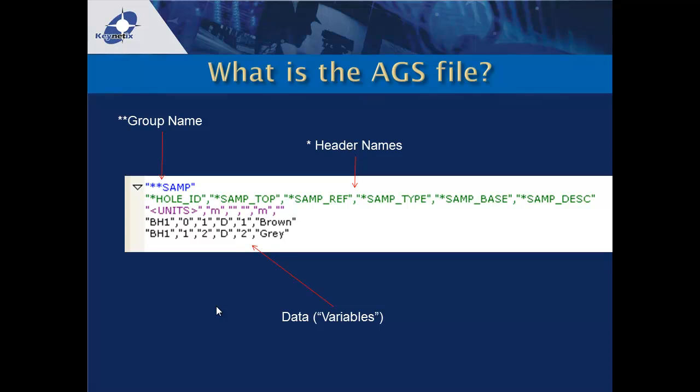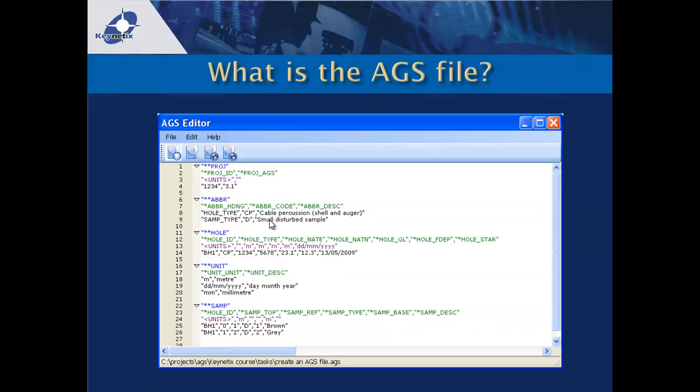There's a UNITS row to specify what the data below will be in, and then we have the physical data itself. For example, borehole 1 has a sample going from 0 metres to 1 metre, referenced as a type D, and described as brown. These AGS tables — or groups — are all added together into one AGS file. Here we can see a simple screenshot using an AGS editor, a free product from Keynetix. Importantly, an AGS file is simple — you can import it into Excel quite easily and start producing SPT with depth plots straight away.